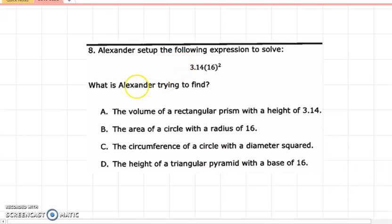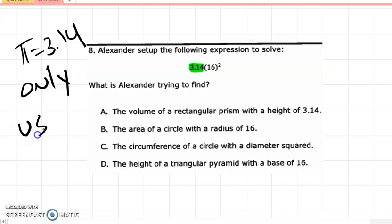Number 8 there. Alexander set up the following expression to solve. What is Alexander trying to find? Well, a key piece of information here is that 3.14, which is pi, so pi is equal to 3.14, is only used in circles. Okay? So only used in circles. We don't use 3.14 for rectangles, triangles, none of those. Only for circles. So then you look at your choices there. It's only used in circles, nothing else. And so you gotta look there. I can eliminate a few of them just knowing that.